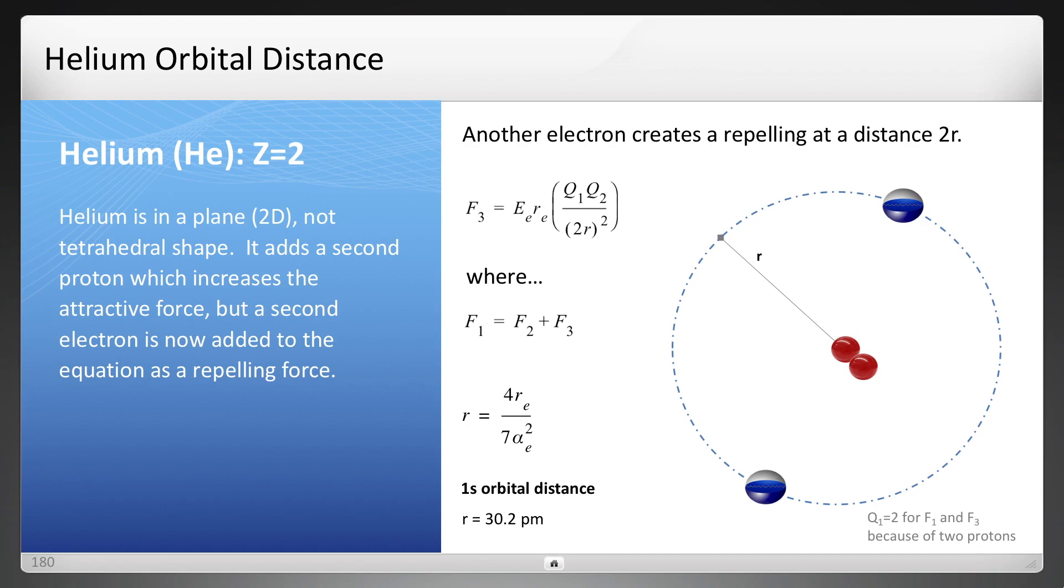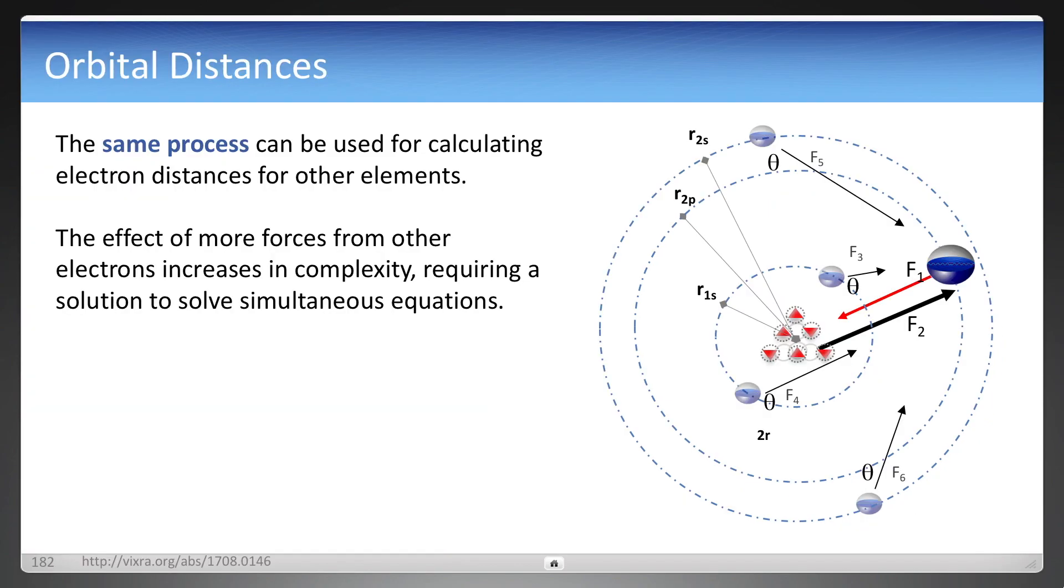And this is all done with classical physics, and yes, you could do it for all the other electrons and atom configurations as well. But it does become more complex. It becomes more complex for many reasons. You've got electrons not only at various different distances, but at different angles relative to the direction of the electron being measured, and the nucleus, all of which has to be determined. And it does require solving simultaneous equations all at once, but it can be done.